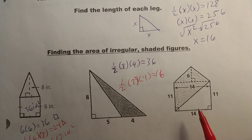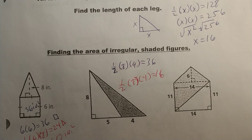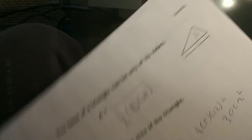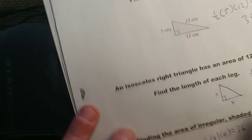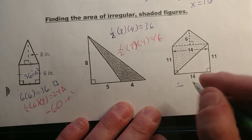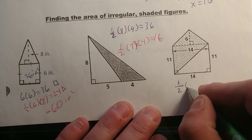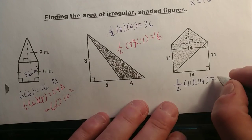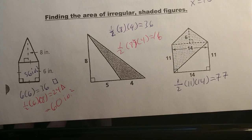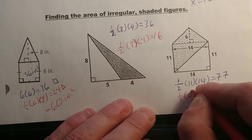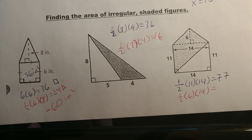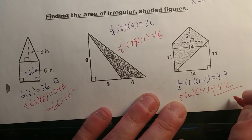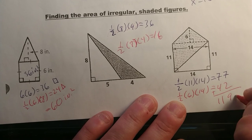For the last one, add up this triangle and this triangle. For the first triangle, the base is 11 and the height is 14, so one half times 11 times 14 gives 77. For the second triangle: one half times 6 times 14 gives 42. Add those up: 77 plus 42 equals 119 units squared.